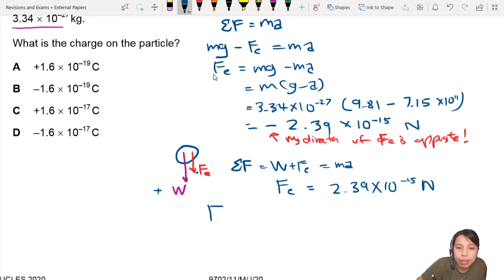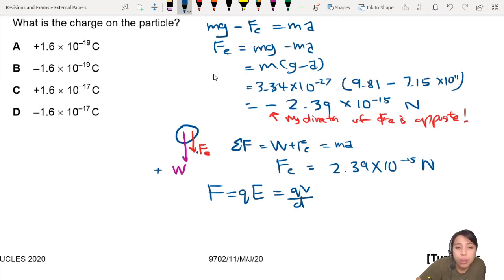Then from there you can find what is the charge of the particle. F equals QE, but we don't have electric field, so maybe QV over d, because we have those values, right? So now we can say F equals QV over d.